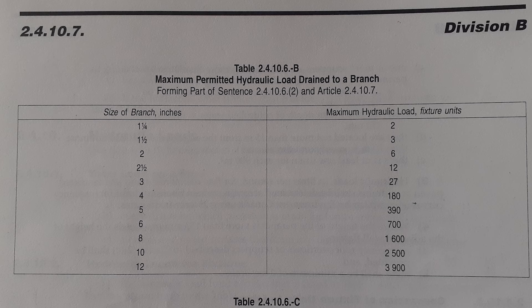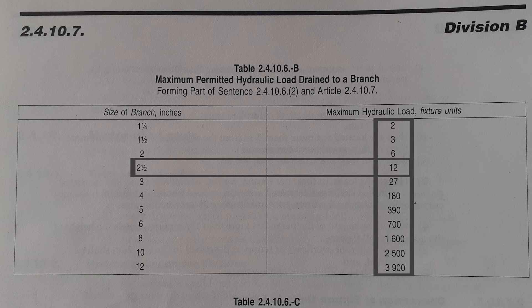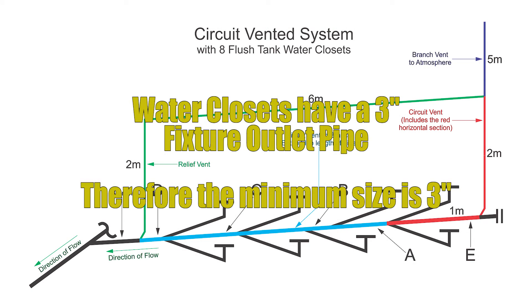Now here's a tricky one. If we look at our branch table, it says we can use 2-and-a-half-inch pipe for 12 fixture units — but that pipe size doesn't exist. On top of that, the water closet has a fixture outlet pipe of 3 inches, so pipe A needs to be 3 inches because we can't go smaller.